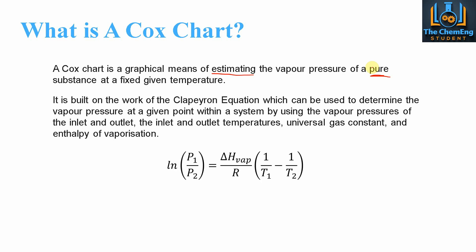The Clapeyron equation is plotted on a logarithmic scale, and that's what we'll see with the Cox chart as well. It's a logarithmic plot of ln of the ratio between the pressure at the inlet and the pressure at the outlet, equal to the enthalpy of vaporization divided by the universal gas constant, multiplied by the difference in the reciprocal temperatures — 1/T1 minus 1/T2, where T1 is the inlet temperature and T2 is the outlet temperature.